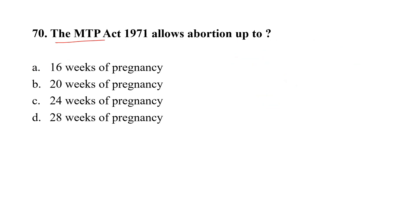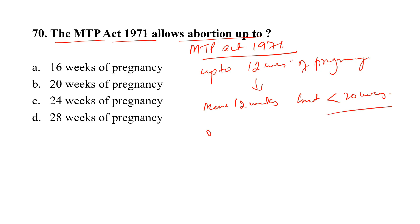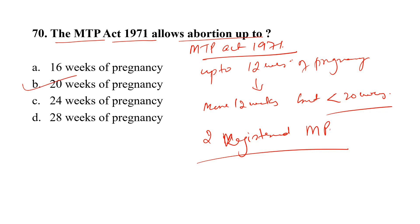Question number 70. The MTP Act 1971 allows abortion up to: Option A, 16 weeks; Option B, 20 weeks; Option C, 24 weeks; Option D, 28 weeks. The MTP Act 1971 authorizes a registered medical practitioner with experience in gynecology and obstetrics to perform abortion up to 12 weeks of pregnancy. However, if pregnancy is beyond 12 weeks but less than 20 weeks, two medical practitioners are required. The correct option is B, 20 weeks.